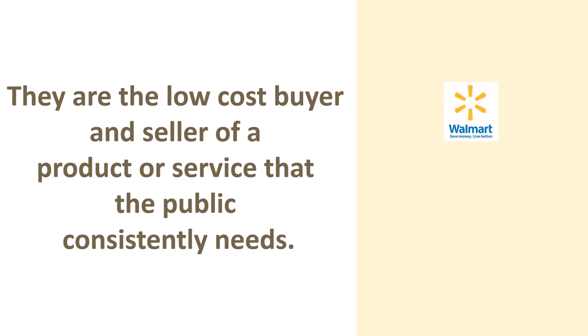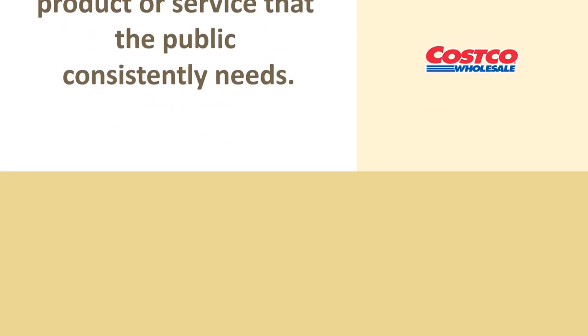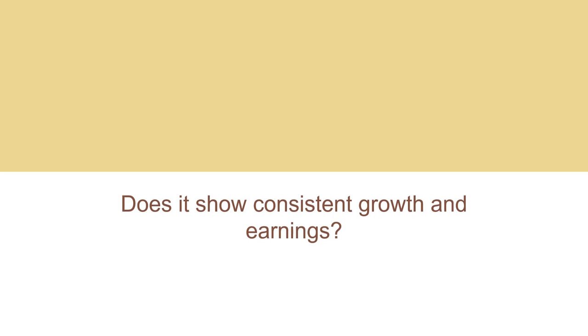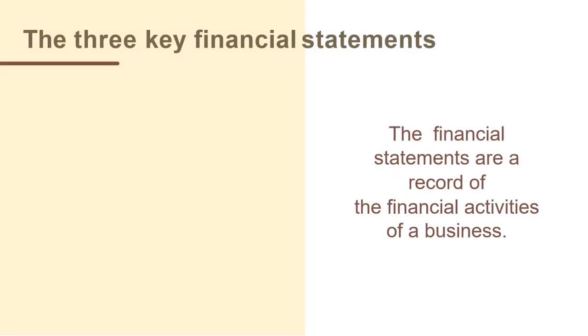Third, they are a low-cost buyer and seller of a product or service that the public consistently needs, which allows these companies to get their margins higher than their competitors and still be the low-cost seller. Examples include Walmart or Costco. These companies have monopoly-like economics that give them a long-term competitive advantage, and the underlying economics of these businesses diminish risk while increasing potential for gain. Warren assesses a company's financial statements by asking: does it show consistent earnings? Does it consistently not have to spend large sums on R&D? Does it show consistent growth in earnings? Does it consistently have high gross margins? And does it consistently carry little or no debt?